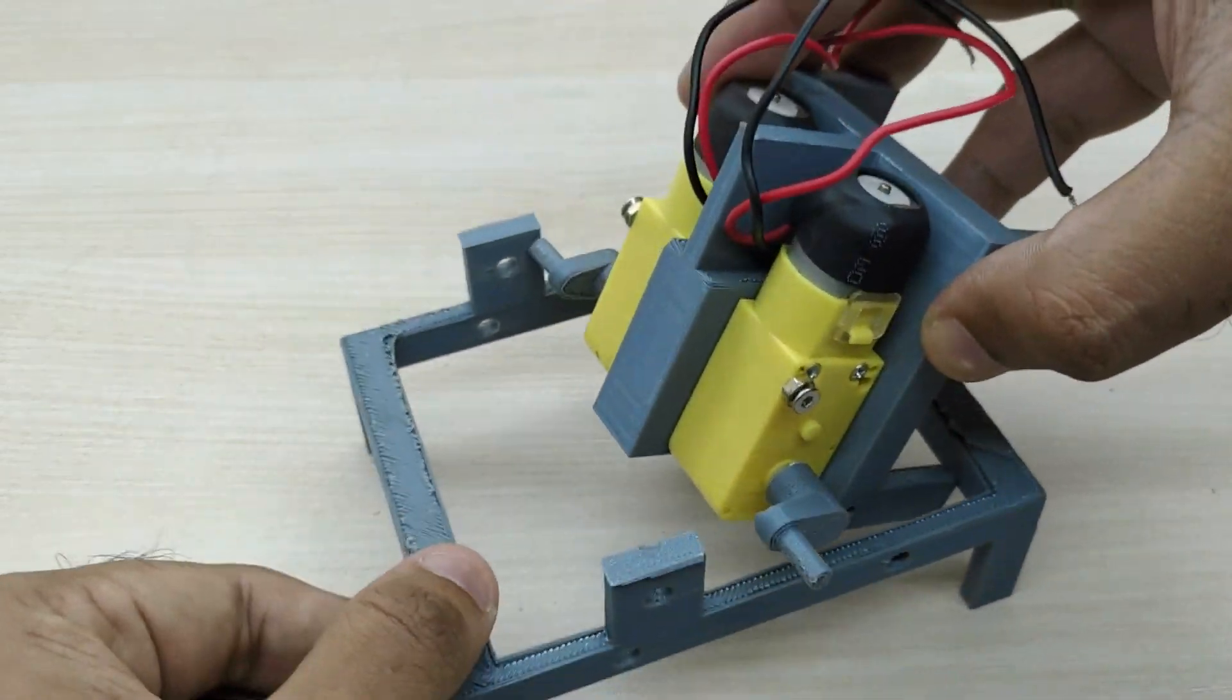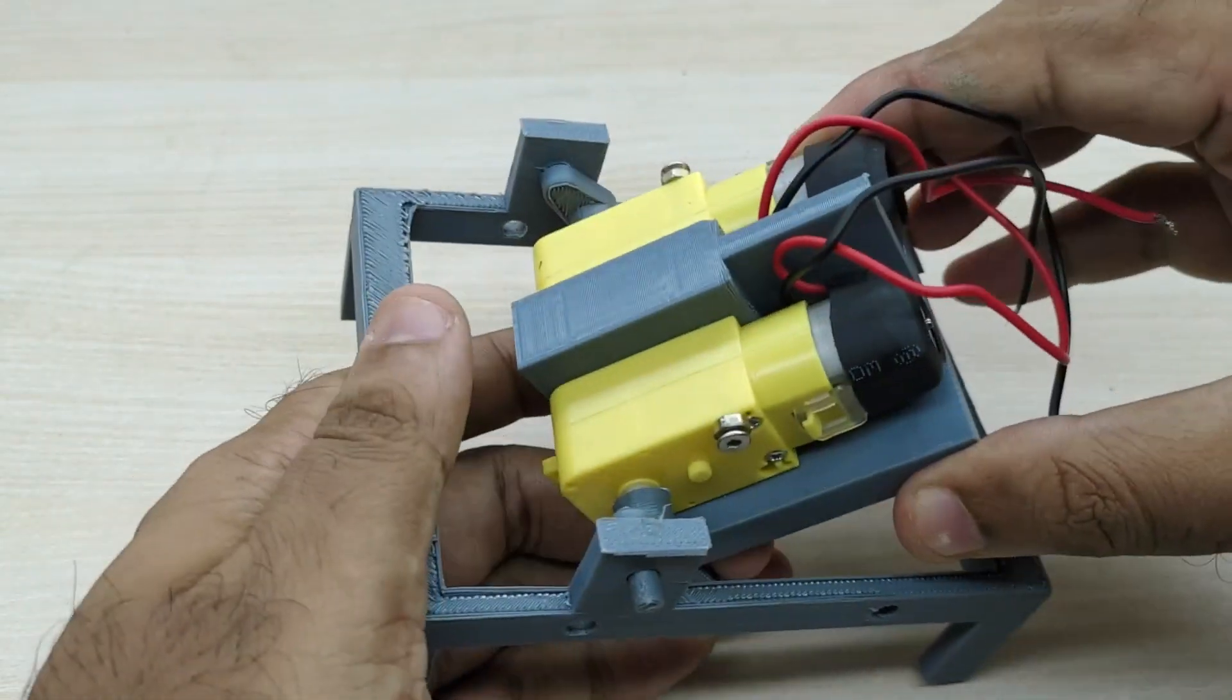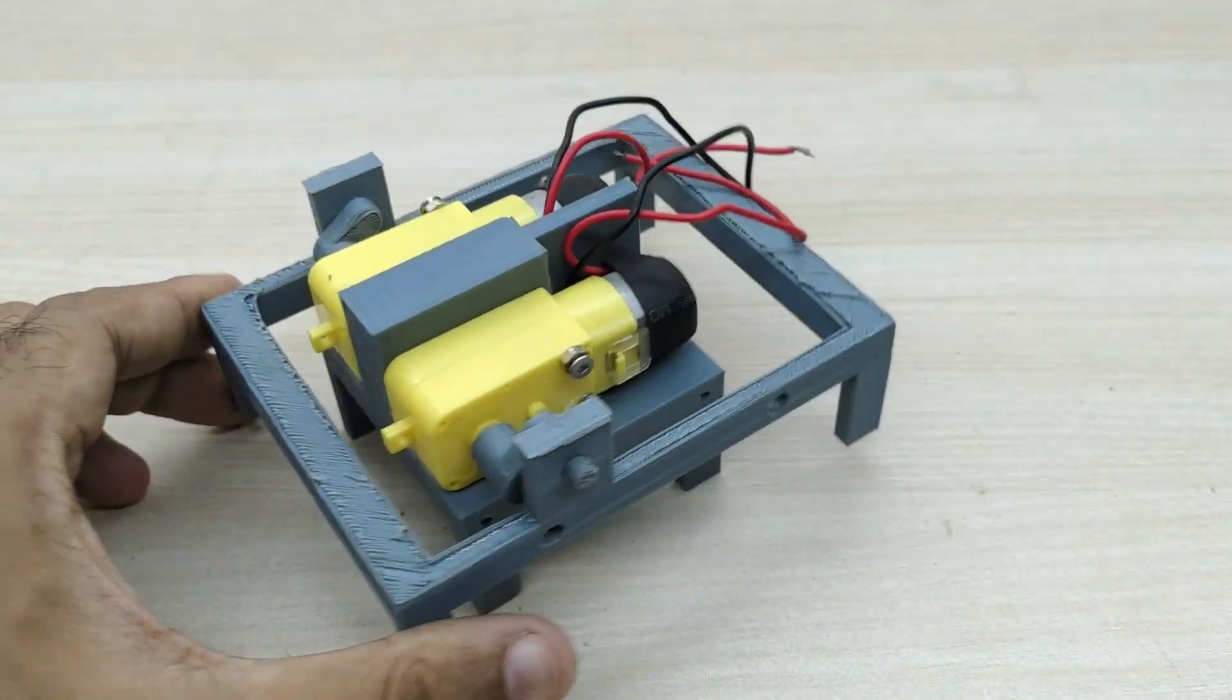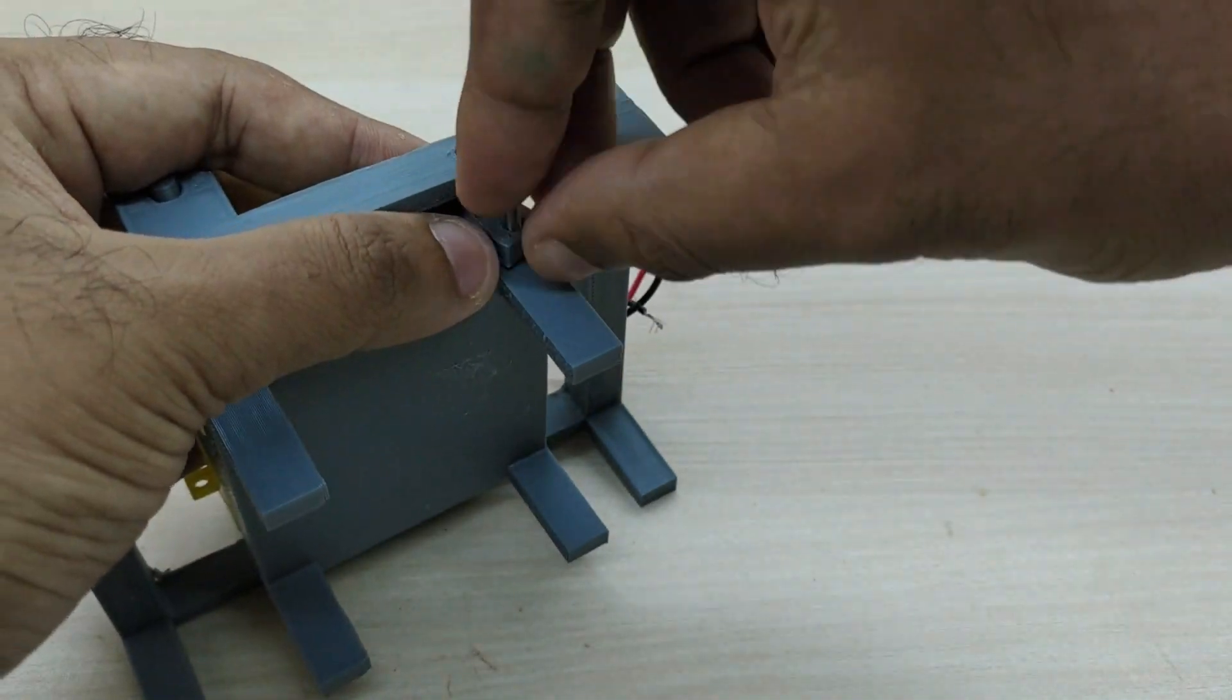Insert this part along with the motors to the outer frame with legs. Connect all the other 4 3D printed legs as shown.